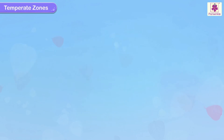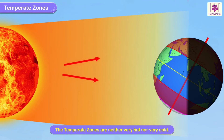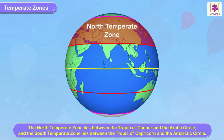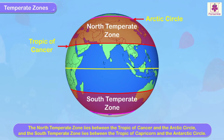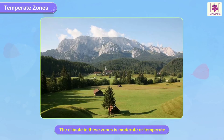2. Temperate Zones: The temperate zones receive slanting rays of the sun and are therefore neither very hot nor very cold. The north temperate zone lies between the Tropic of Cancer and the Arctic Circle, and the south temperate zone lies between the Tropic of Capricorn and the Antarctic Circle. The climate in these zones is moderate or temperate.